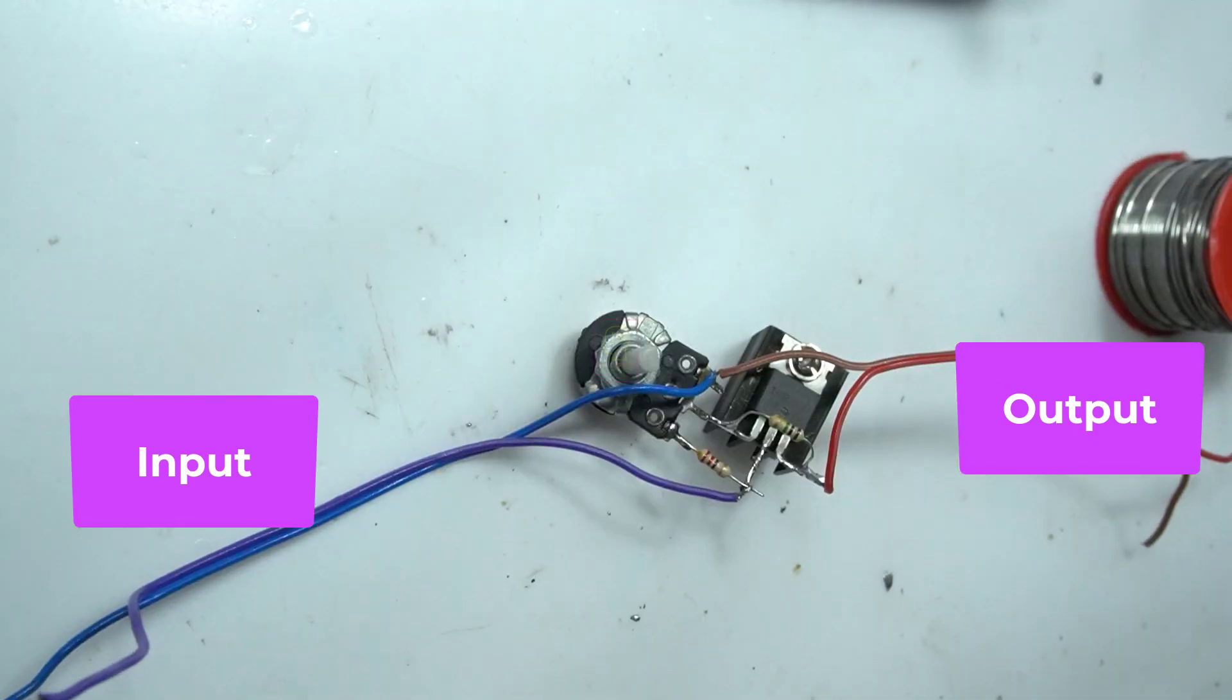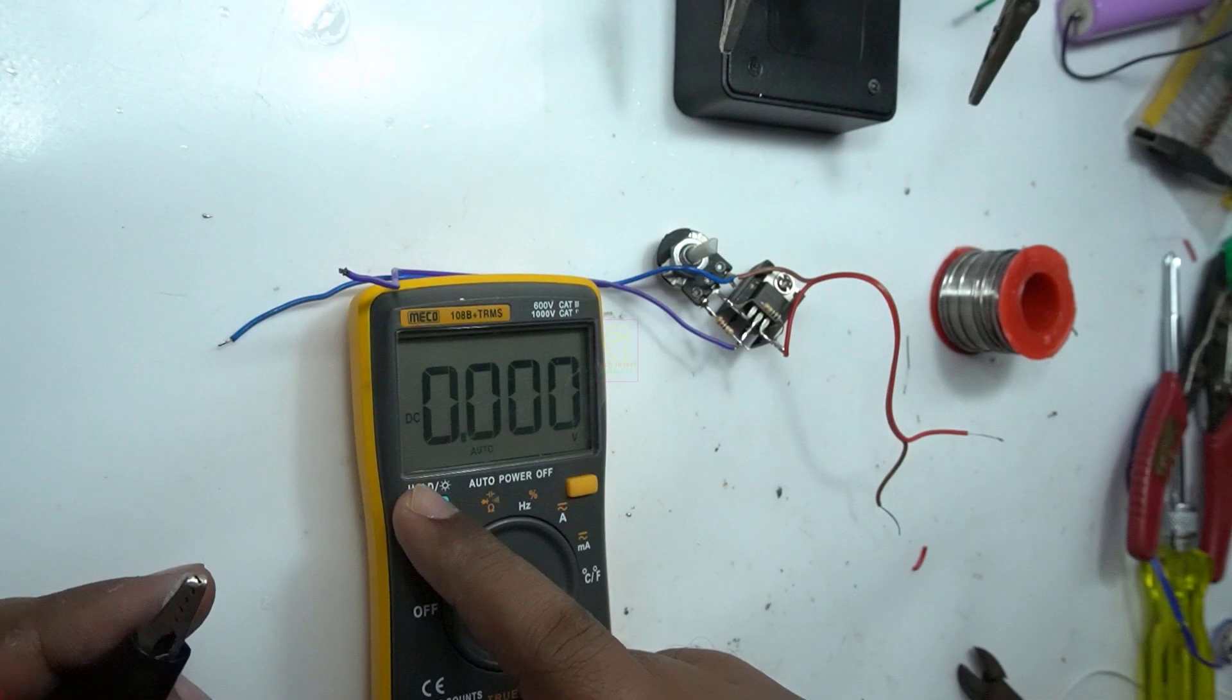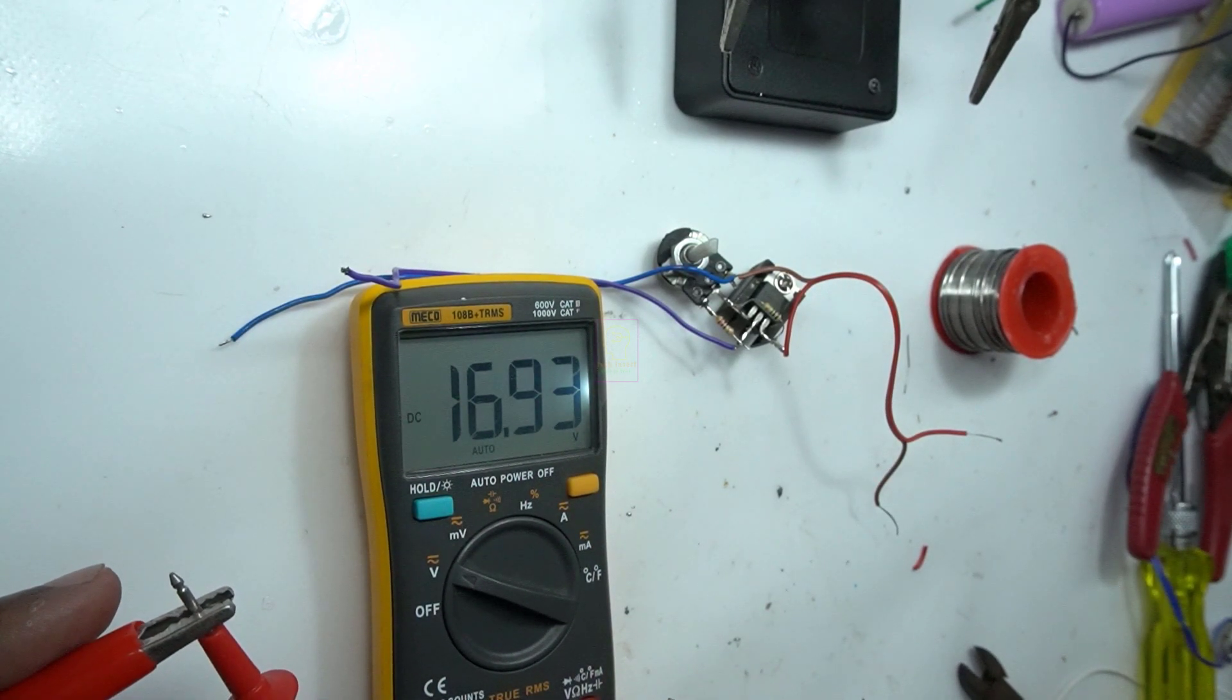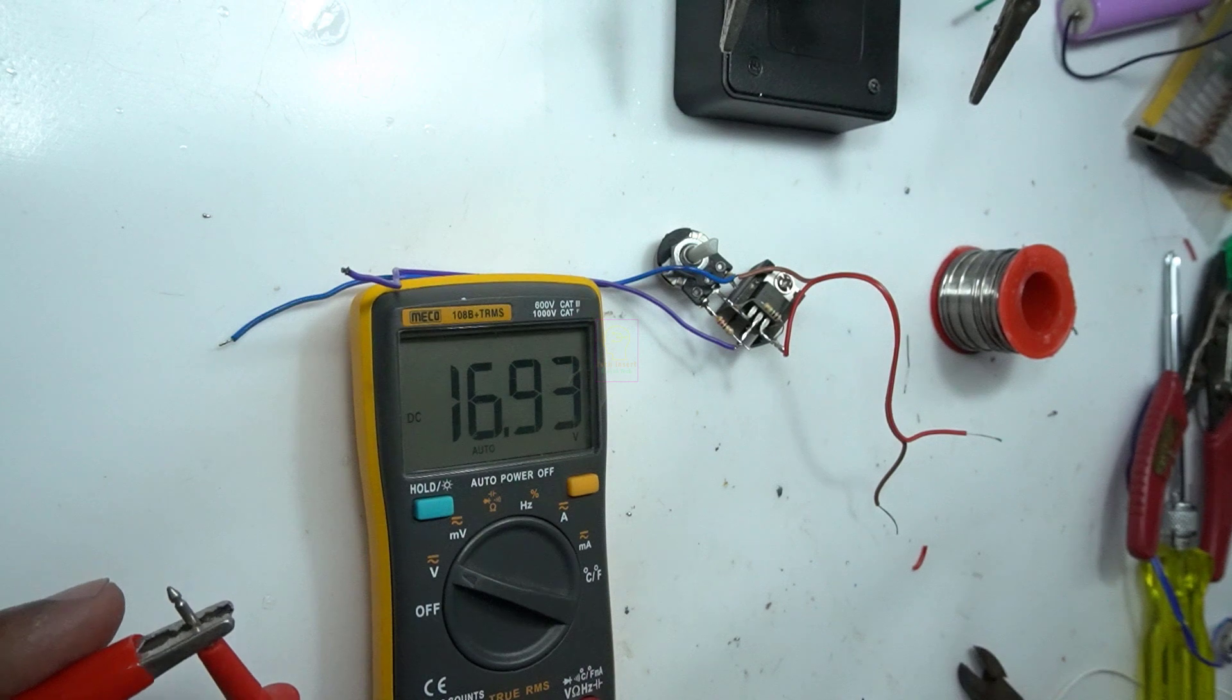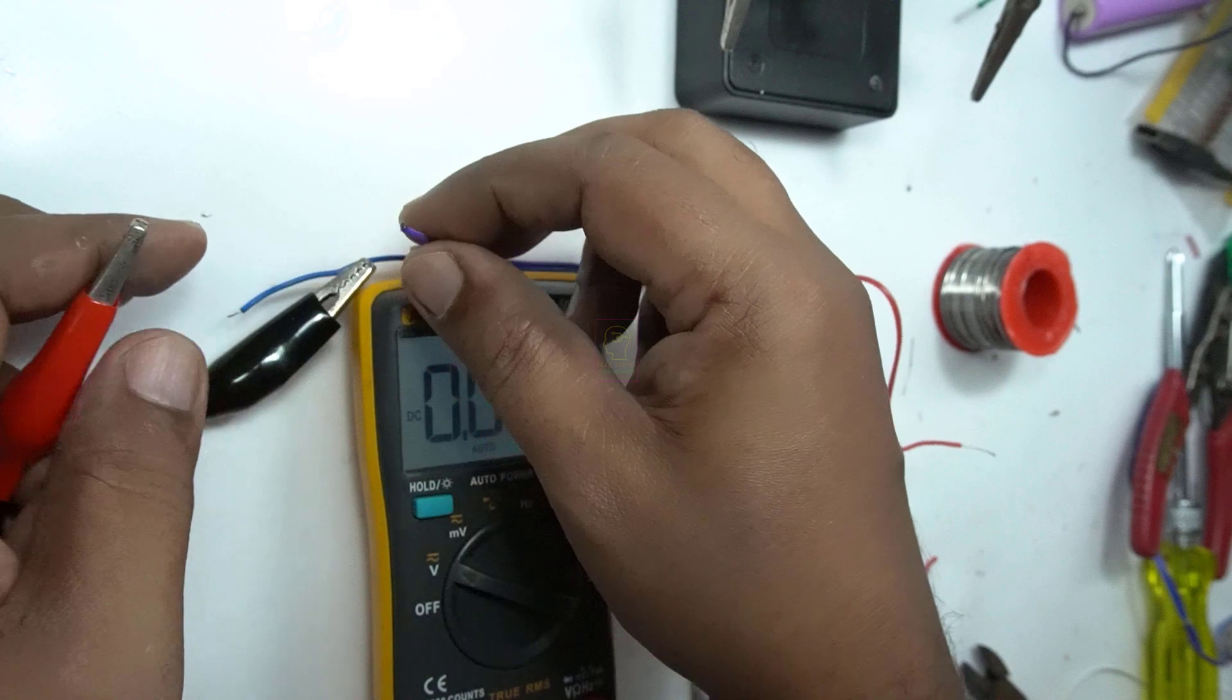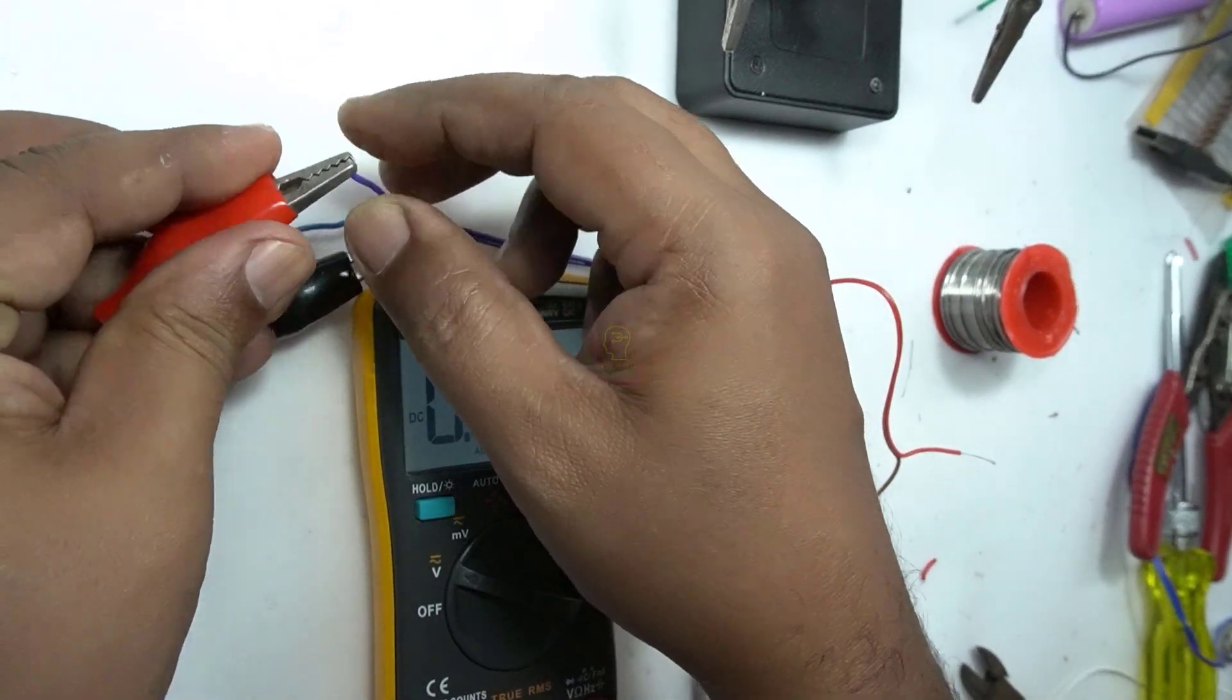The assembling has completed and now it's testing time. For testing, I am using a 12 volt transformer power supply without regulation and it has 5 ampere capacity. So open terminal voltage will be more than 16 volts. We are connecting the input line to this circuit.